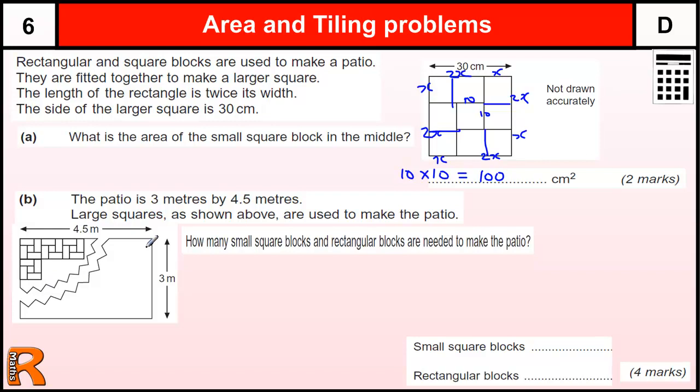Fitting the tiles across, you've got 4.5m. Now I would always recommend, especially if you've got a calculator available, to change your units into the smaller type of units. So we're dealing with centimeters here and meters here, so change this into 450 centimeters and 300 centimeters.